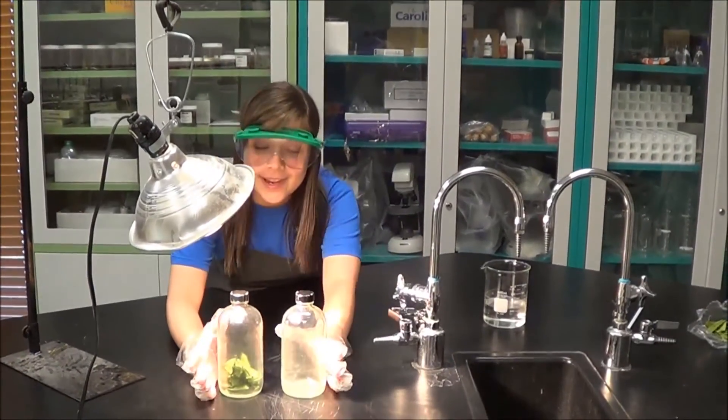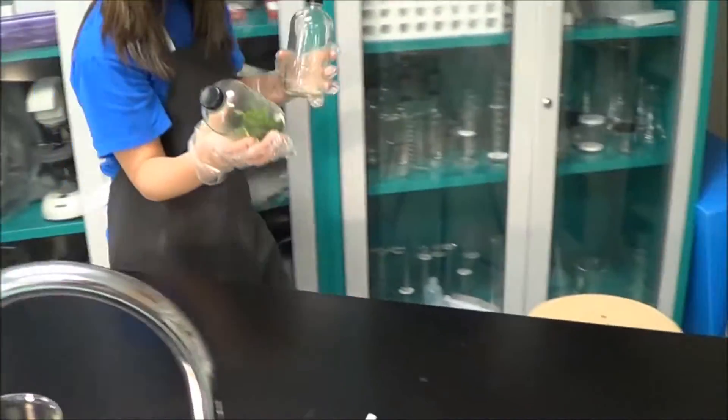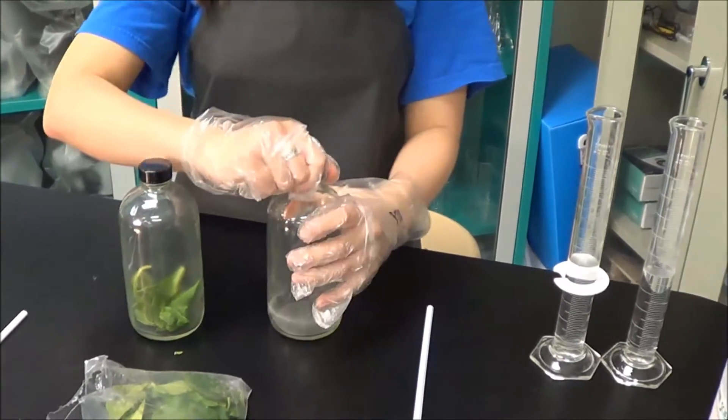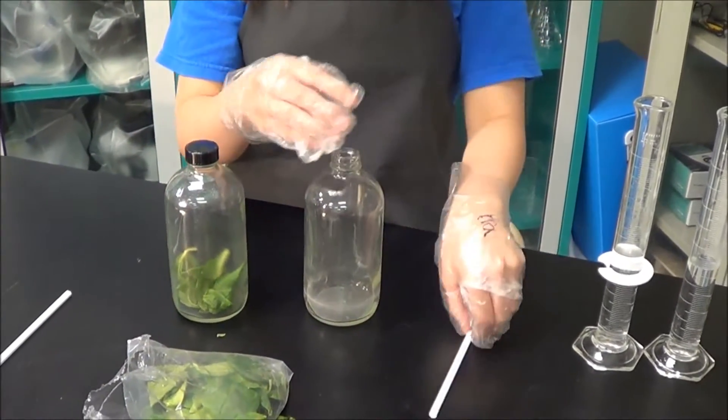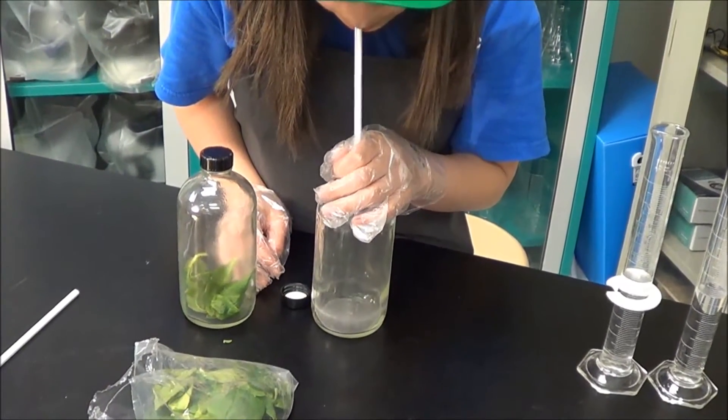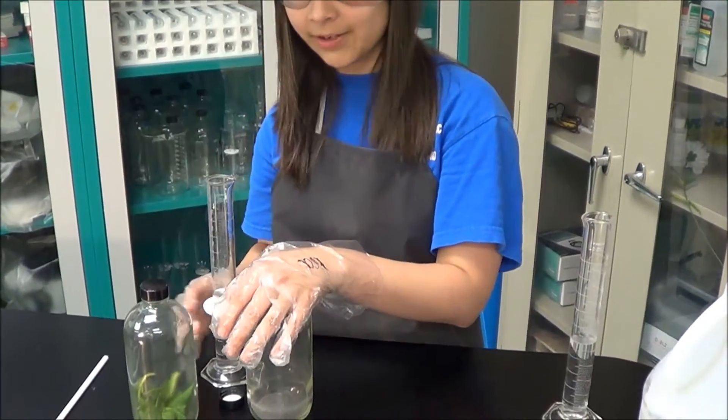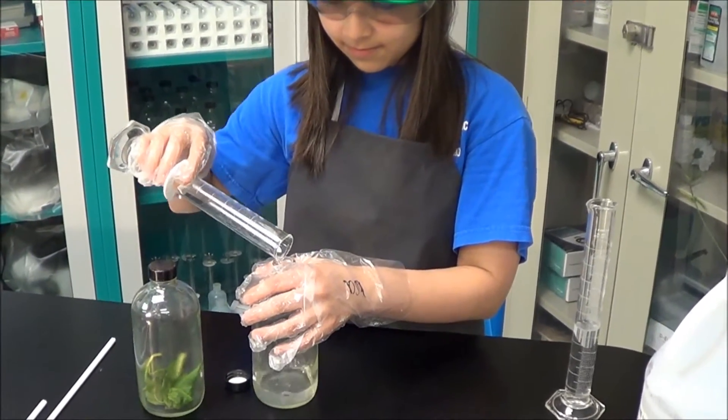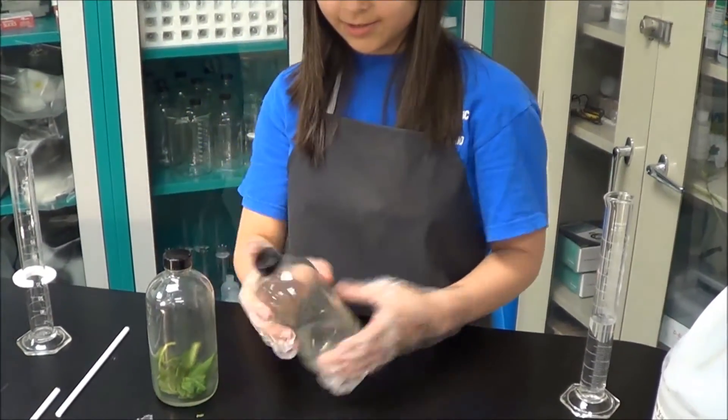So it's been an hour since we've left it under this lamp. And now we're going to take the one without spinach and open it. And we're going to blow again through it for 30 seconds. Now I'm going to pour the 15 milliliters of limestone into the bottle, close it, and then you shake it.